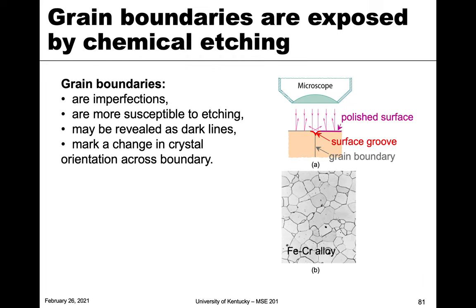For example, we can expose grain boundaries by chemical etching. As shown in a previous module, grain boundaries are imperfections — they are more chemically reactive, which means they're more susceptible to the chemical etchant. We apply this etchant, which is typically a liquid acid, and it dissolves the boundary between grains preferentially relative to the grain itself.